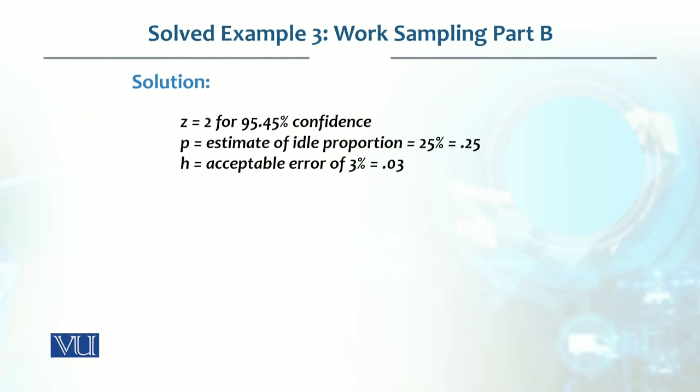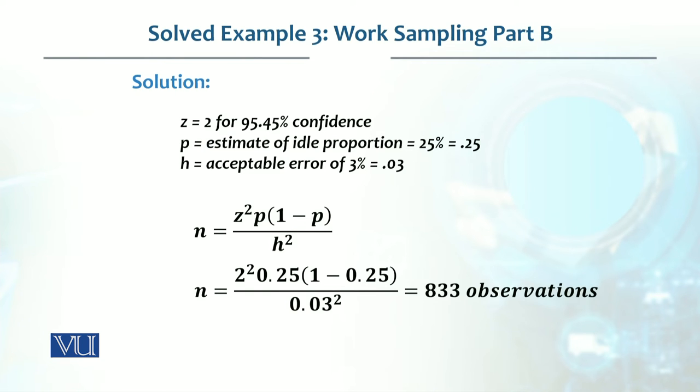that is 3%, which is 0.03 की value. इसको अगर हम यूज करें, तो इस equation के अंदर हम इसको डालें, तो यह आ जाता है, 2 square multiply by 0.25, multiply by 1 minus 0.25, which is 0.75, divided by 0.03 square,